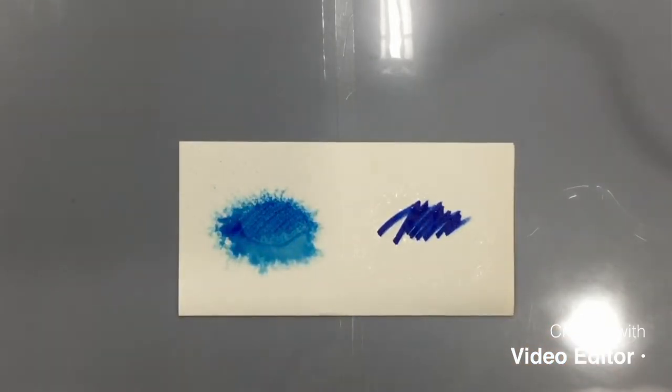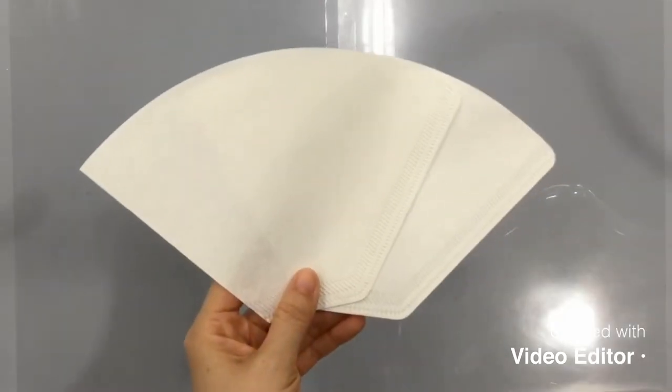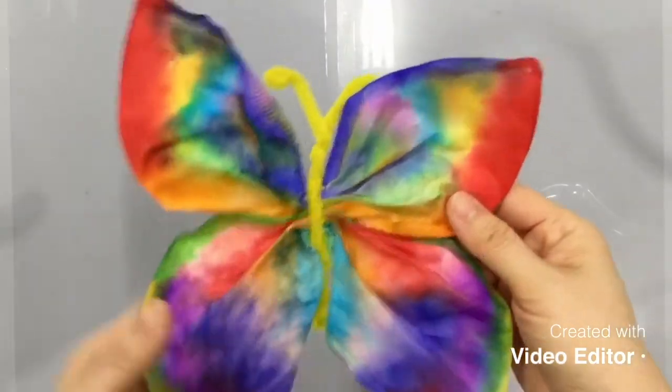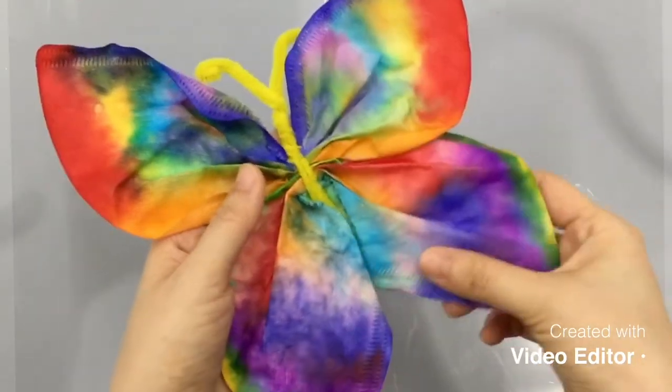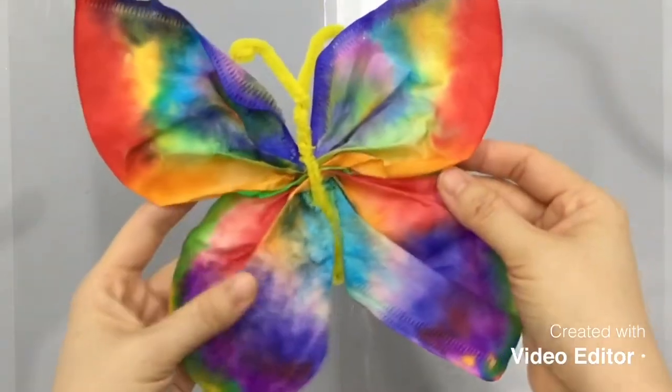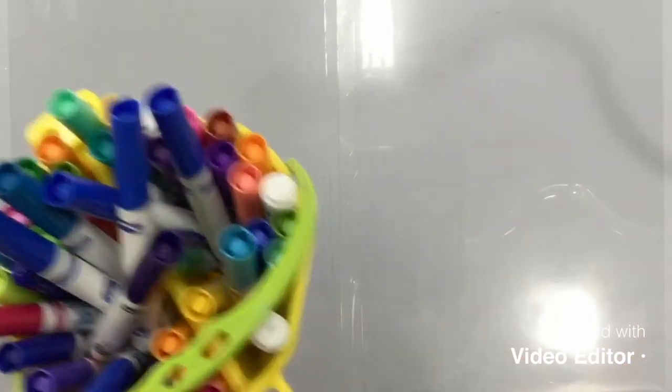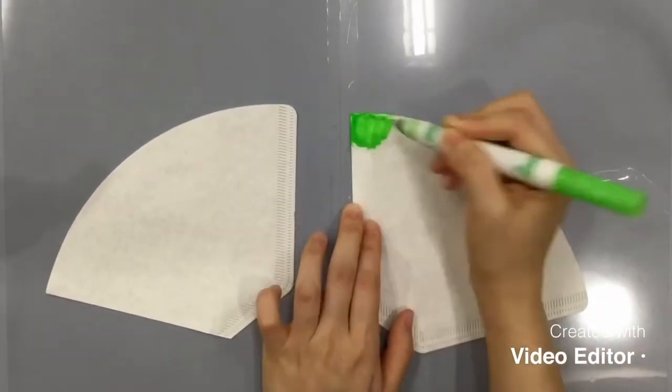And now boys and girls, we are going to transform these coffee filters into a butterfly. Can you guess what type of marker we have to use to create this beautiful watercolor effect wings? That's right, water-based markers. After coloring, we are going to add water to let all the pigments blend into each other.